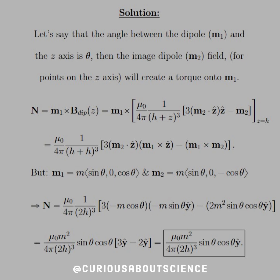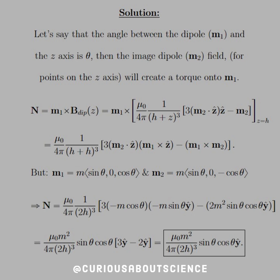So with that, when we're taking the cross product of m1 with z, we get the x component since y cancels everything out and z can't be applied. For that cross product, we get negative m sin θ y hat. And then for m1 cross m2, we get negative 2m^2 sin θ cos θ in the y hat direction. After factoring, we have mu_0 m^2 over 4π(2h)^3 sin θ cos θ (3 - 2) y hat, which gives us the torque.